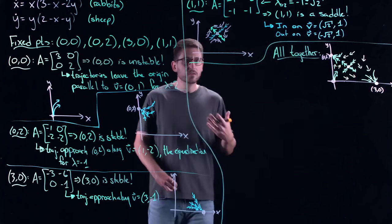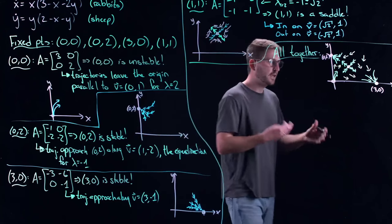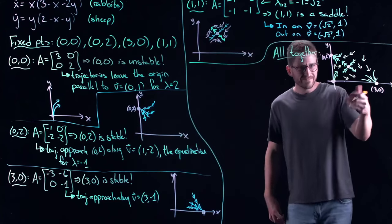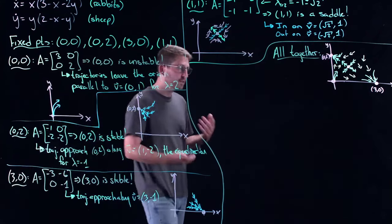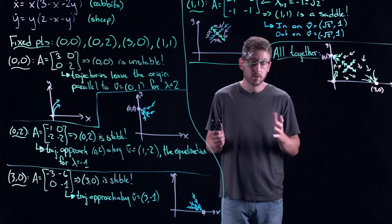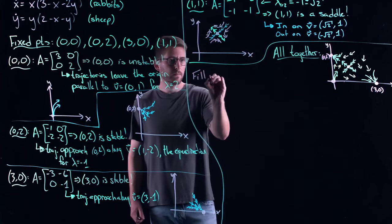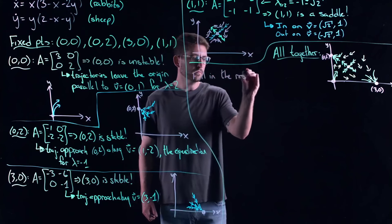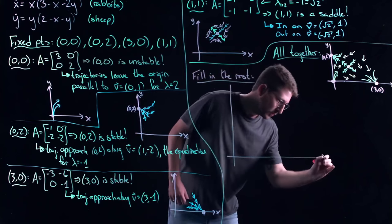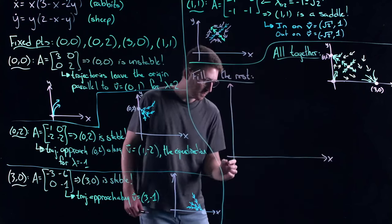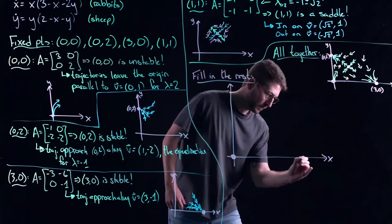It takes a little bit of common sense to fill in the rest — it's a guessing game requiring understanding of the processes. Let's draw a big picture spending time on this. Starting with macroscopic structures: everything comes out of (0, 0), everything goes into the fixed points on the sides, and the saddle in the middle seems to split things. If you stay under a certain line, you wind up at (3, 0); if you stay over it, you wind up at (0, 2).